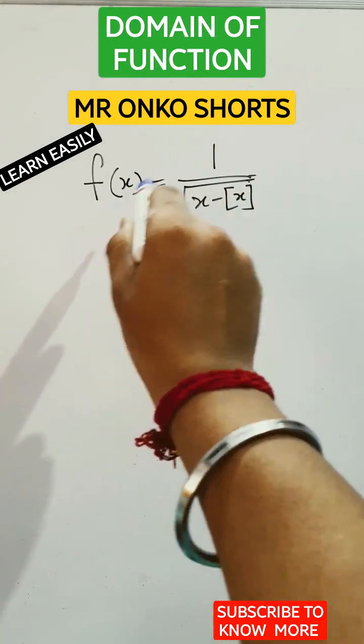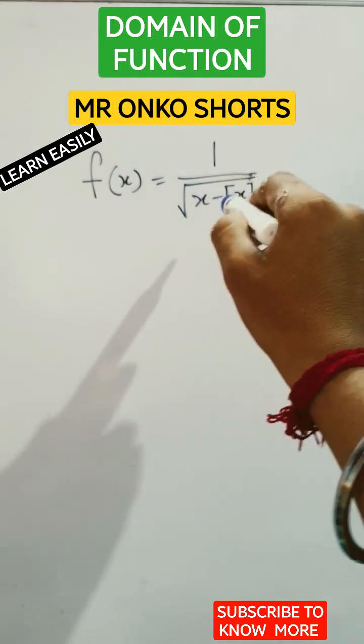Welcome to Mr. Onko Shorts. Today our function is equals to 1 divided by root over of x minus box of x.